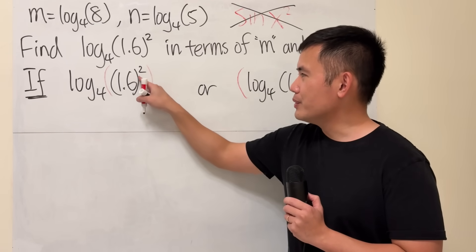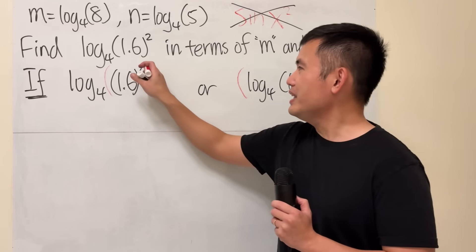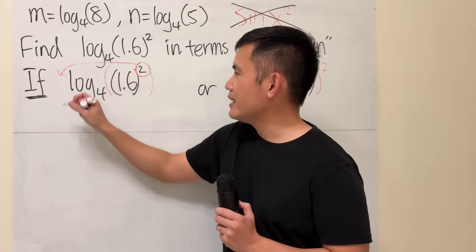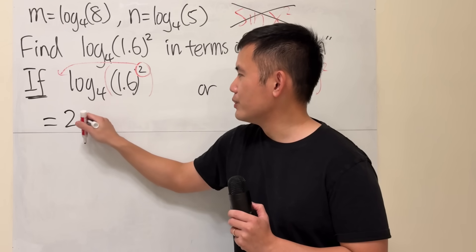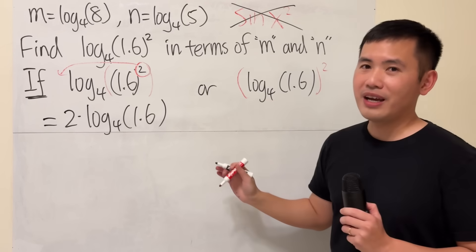Firstly though, because the two is on the inside for the 1.6, by the log property we can really put the two to the front and get this being 2 times log base 4 of 1.6. That's okay.